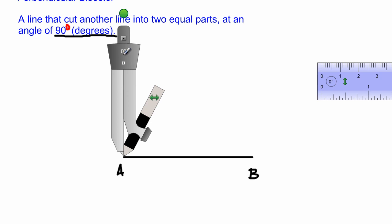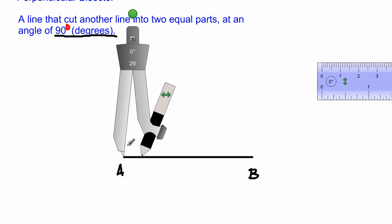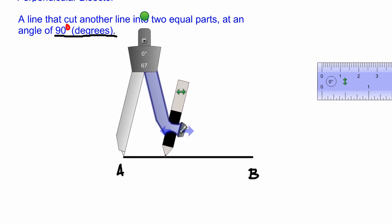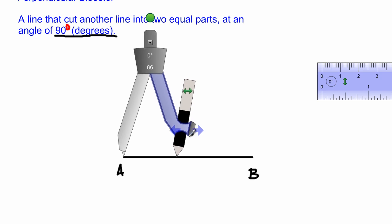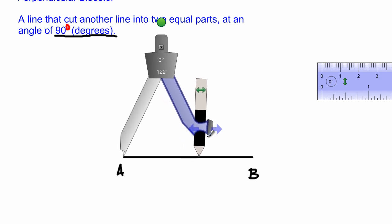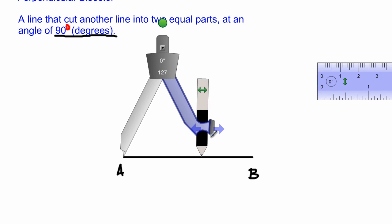Now I'm going to construct a line that cuts AB into two equal parts, and it cuts it at an angle of 90 degrees. So when you're constructing a perpendicular bisector, first place your compass point at the tip of the line at one end, and you're going to open your compass to more than half the length of the line. I can't stop there because that's less than half, so it has to be more than half the length of the line.